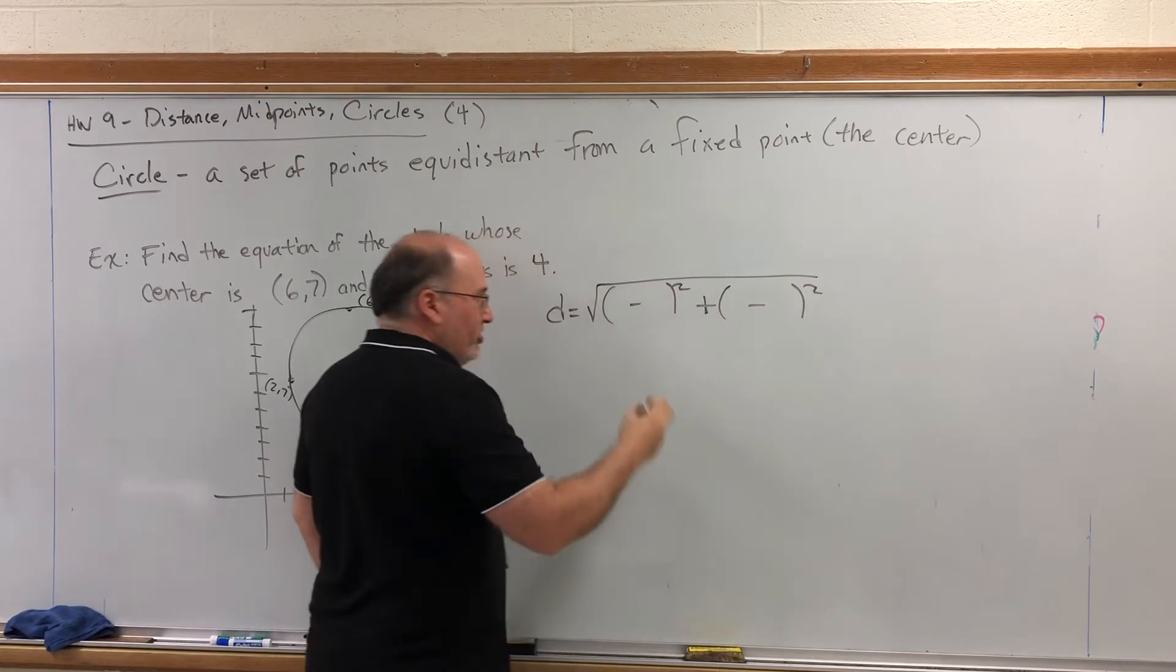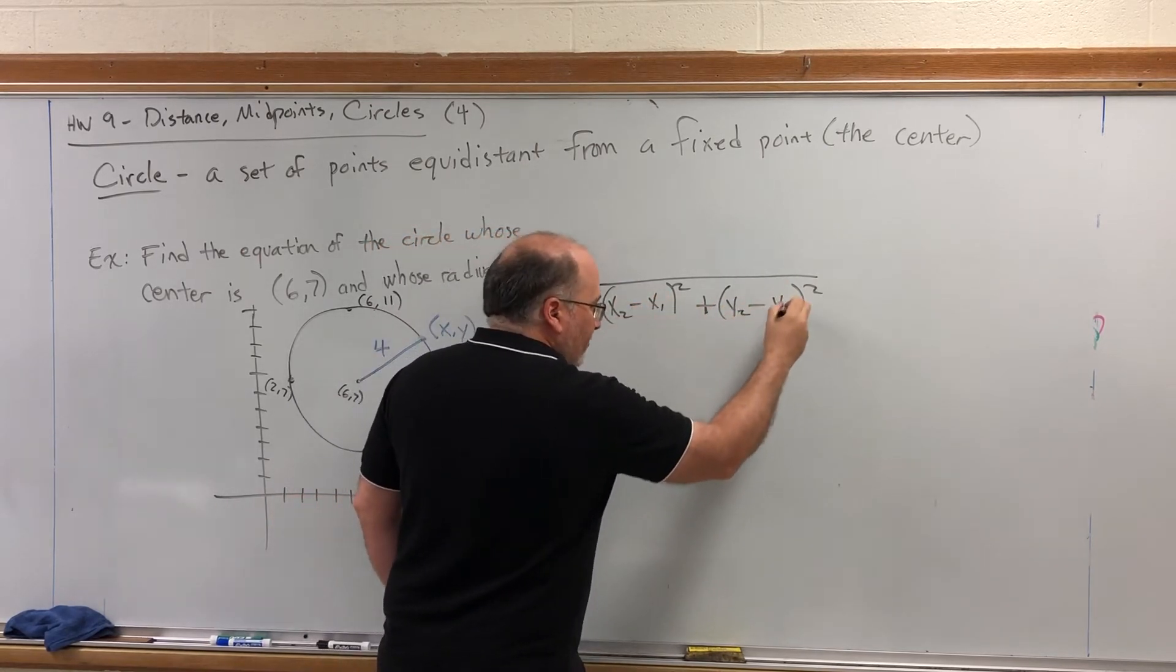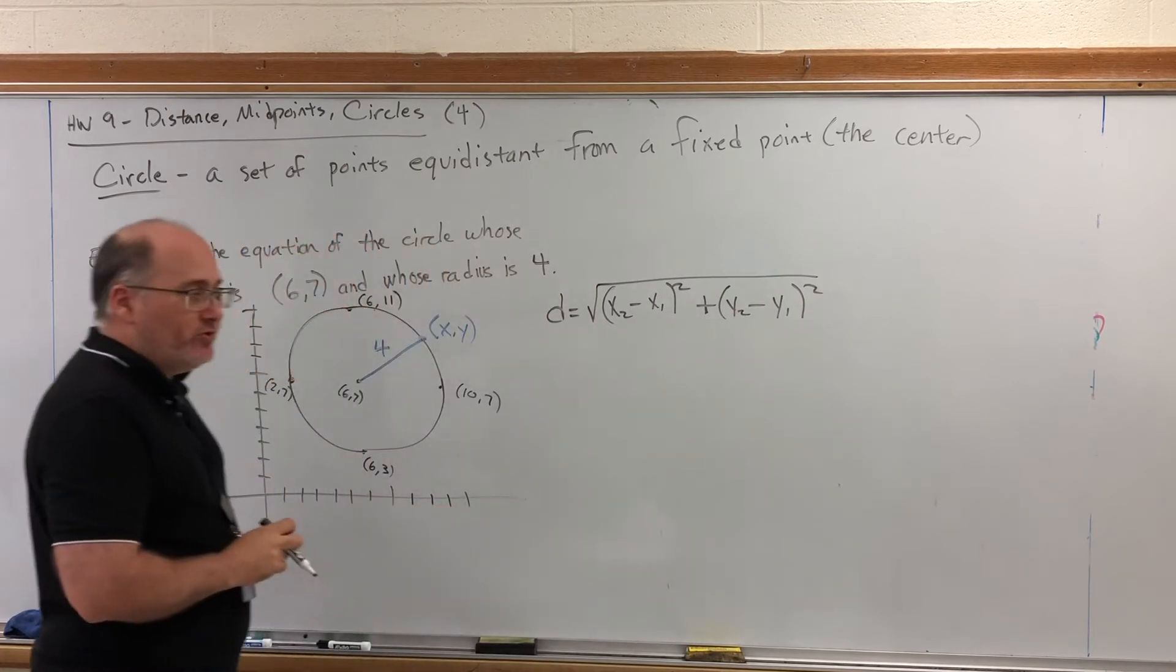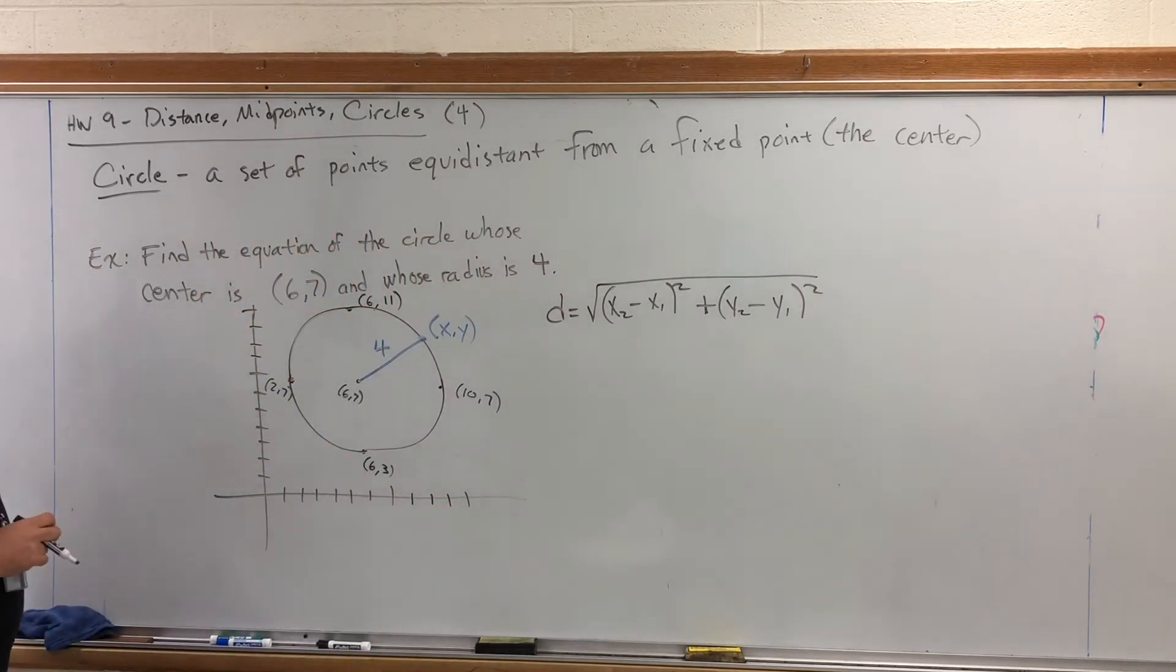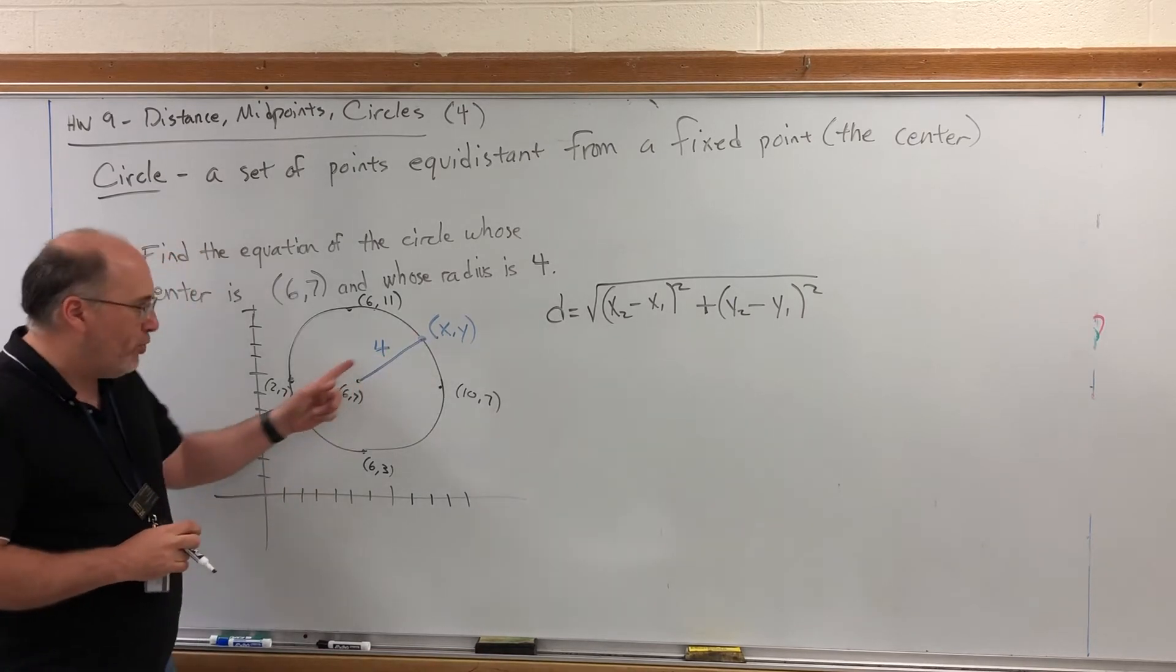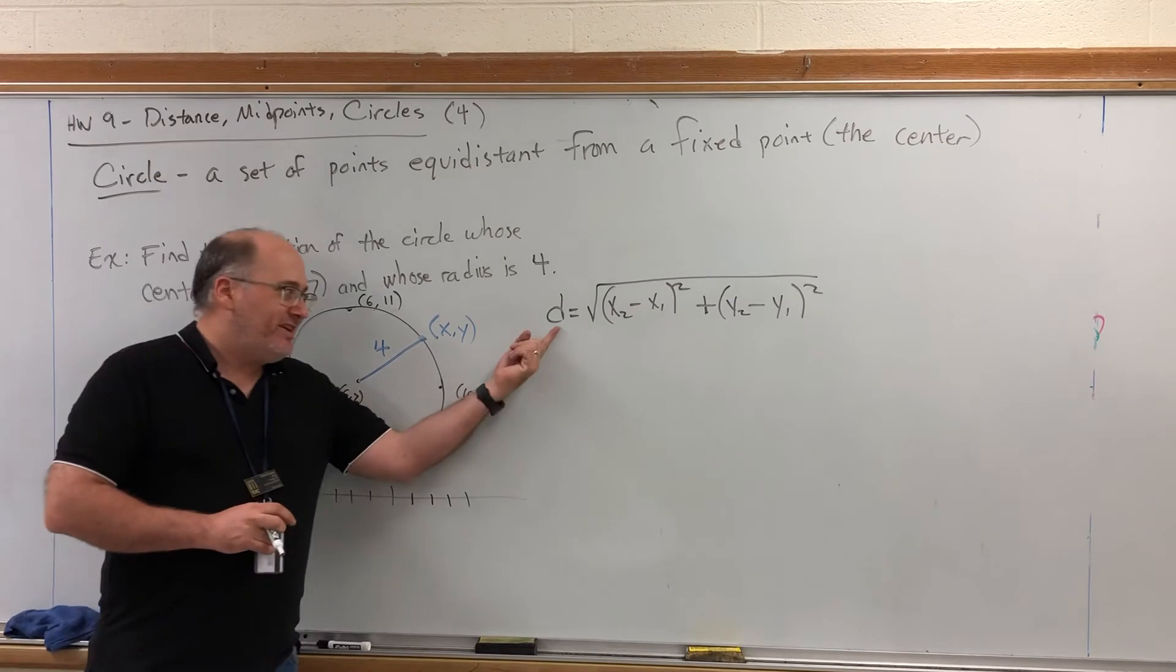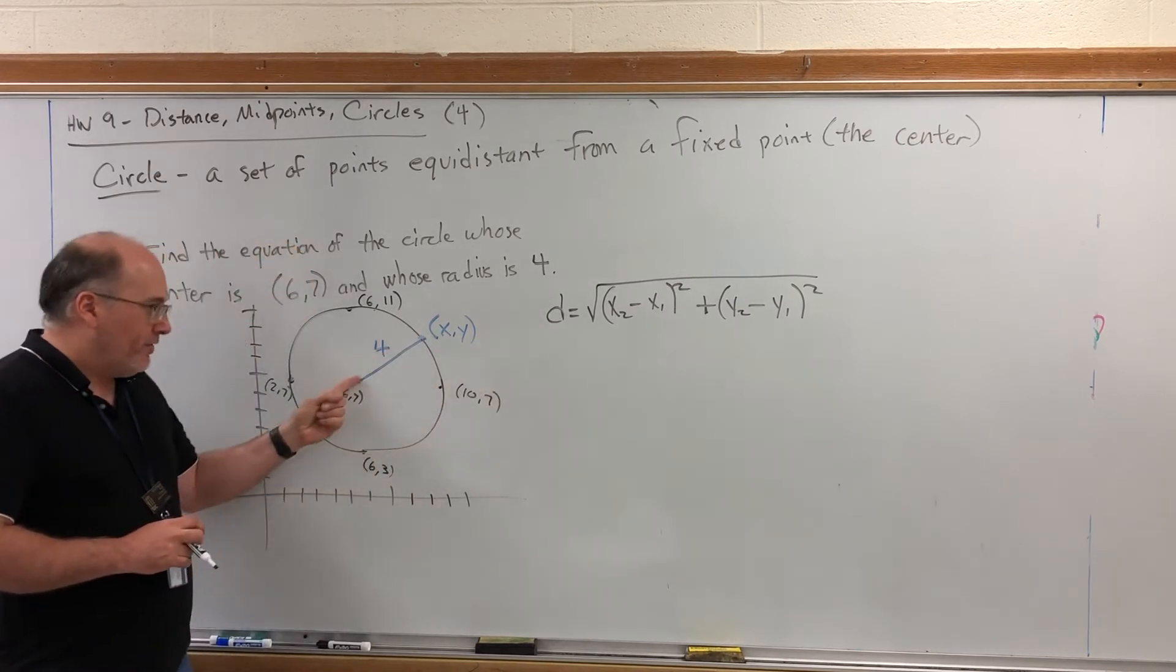The formula for distance is d equals the square root of the sum of the squares of the differences of the x's and the differences of the y's. Well, I've got everything I need to put into this formula. I've got the distance between the points. I know this is the radius, and radius starts with r. But this d represents distance. Radius is a distance.